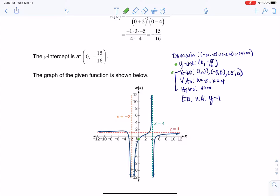I had three X-intercepts: one at 1, 0; one at negative 3, 0; and one at 5, 0. So I see the three X-intercepts. I also see my two vertical asymptotes. I see one at X equaling negative 2 and X equaling 4.